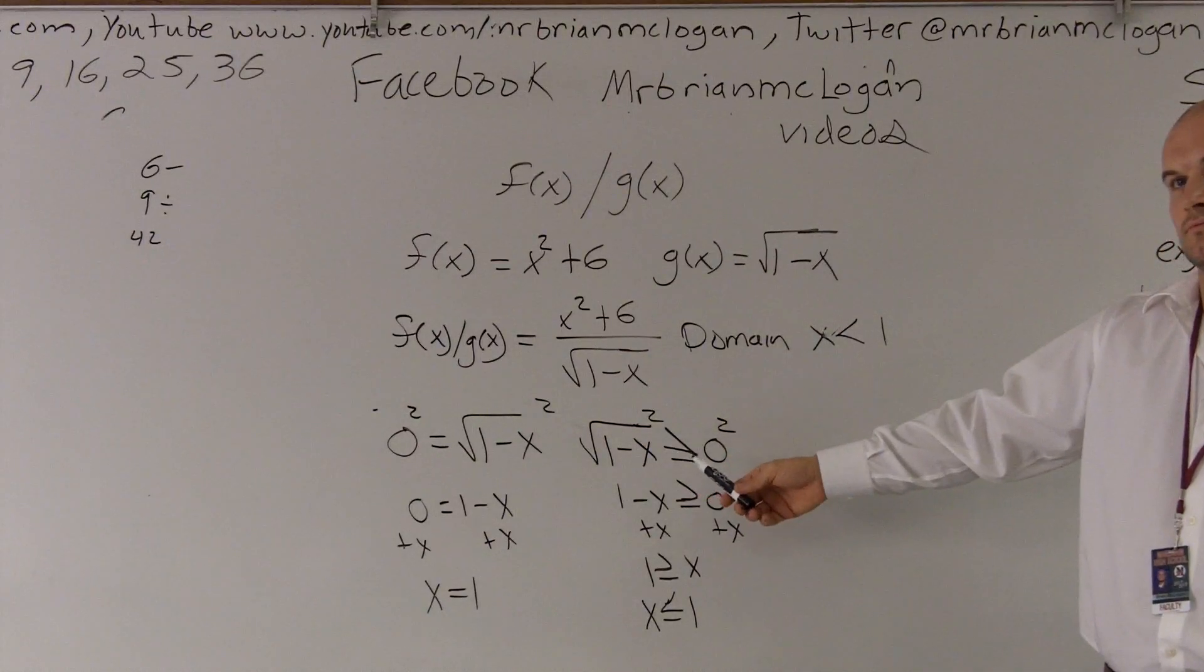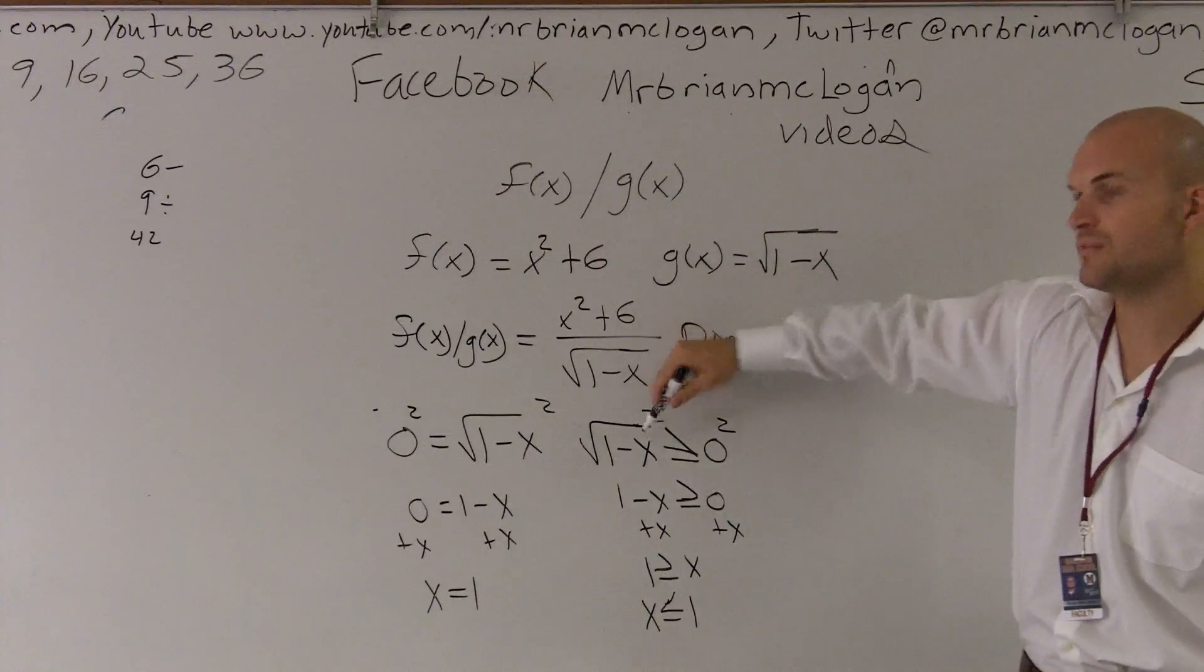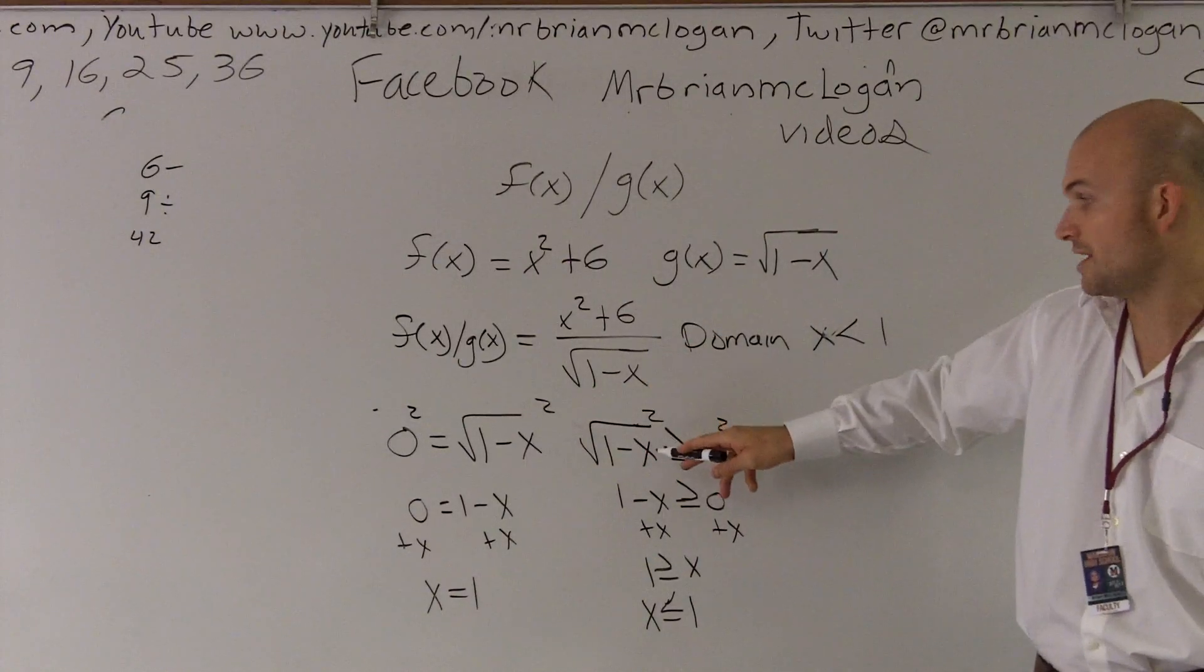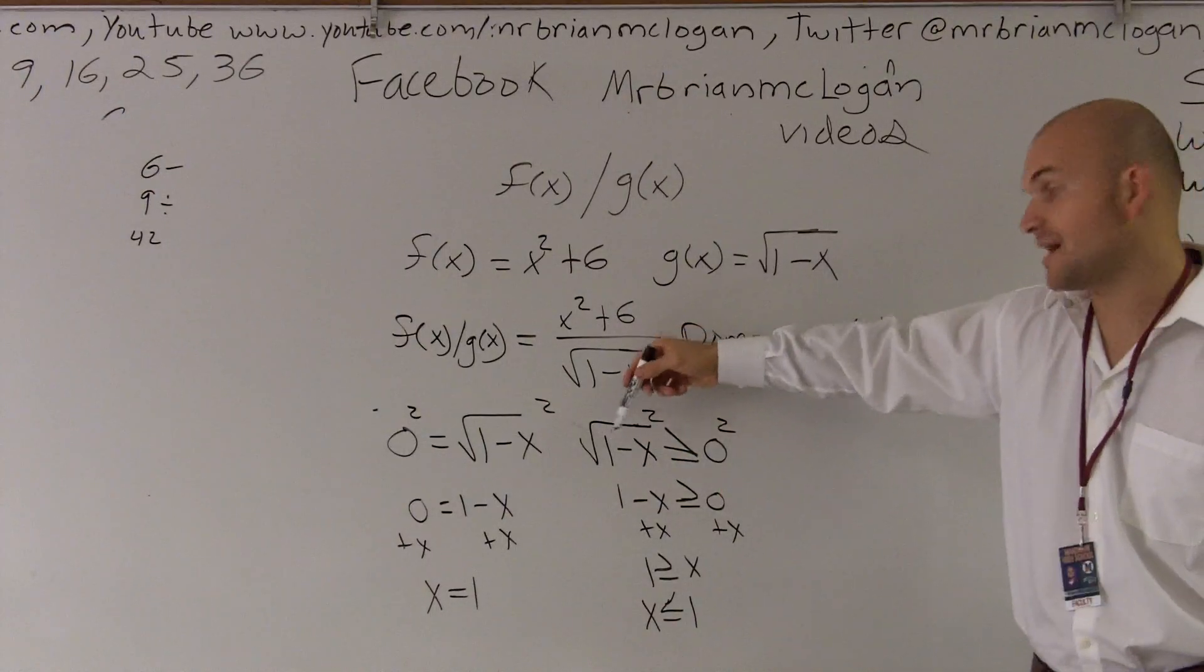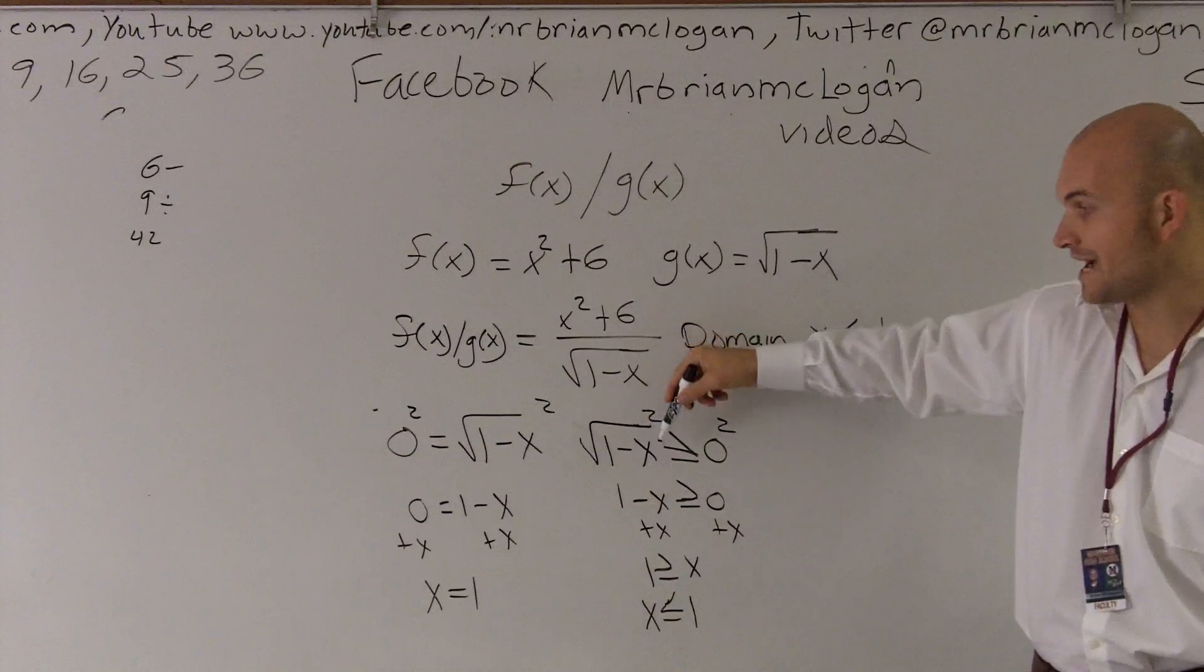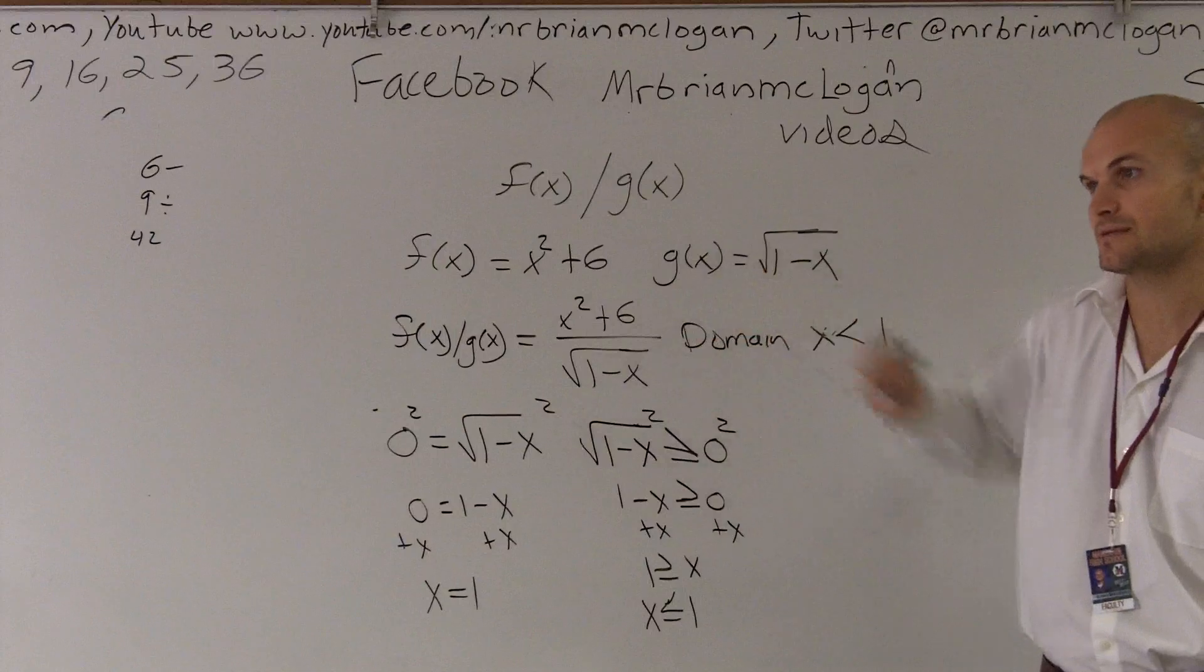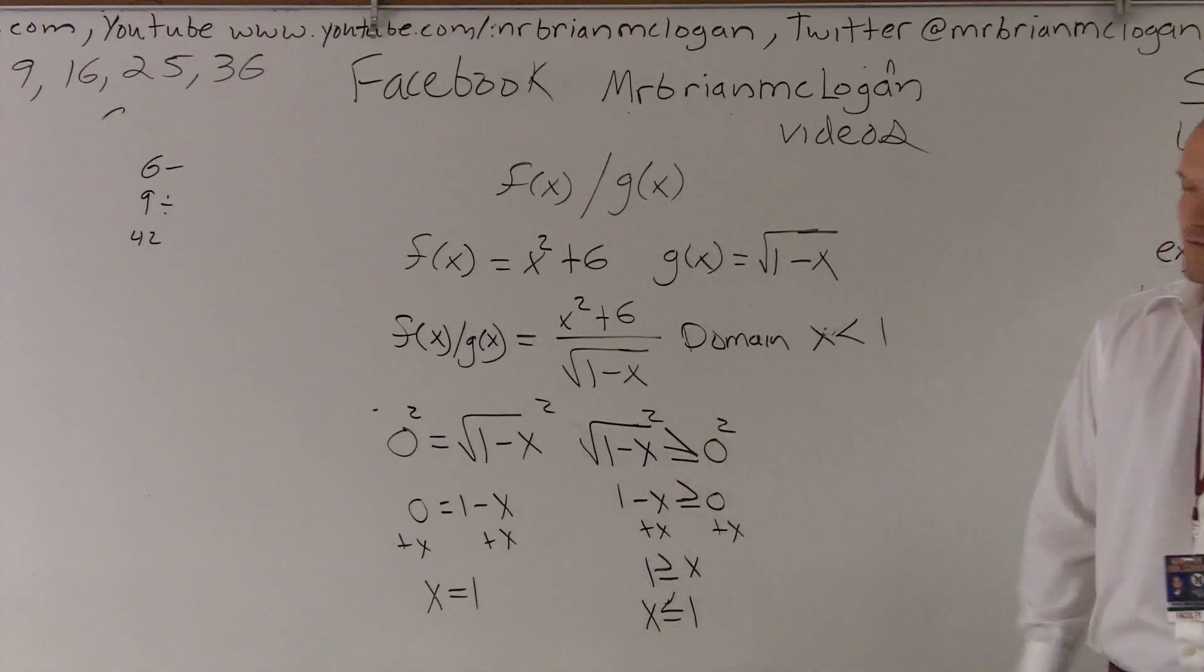If x was bigger than 1, so put it this way. Let's put in 5 for there. 1 minus 5 is what? Negative 4, right? You can't take the root of negative 4, right? Well, let's say if it was negative 5. 1 minus negative 5 gives you positive 6. So then you can take the root of a positive 6. Make sense? So that's the way it kind of works. Just make sure it's solved for it.